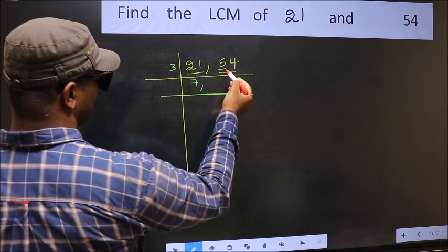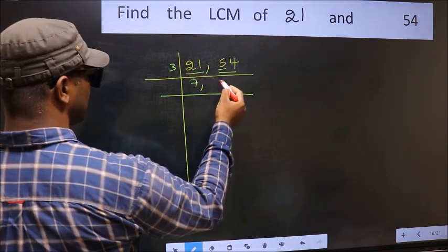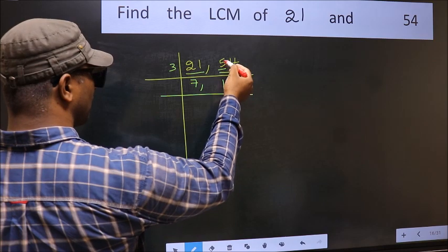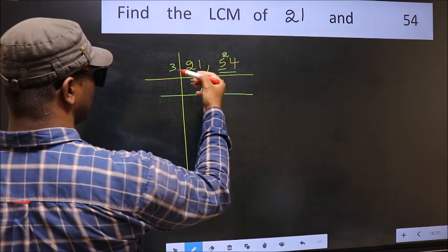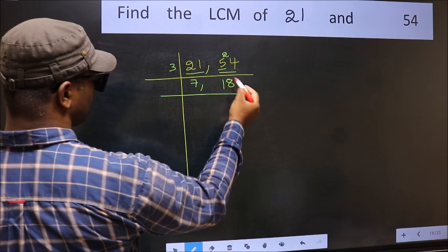First number 5. A number close to 5 in 3 table is 3 once 3. 5 minus 3, 2, 2 carried forward 24. When do we get 24 in 3 table? 3, 8 is 24.